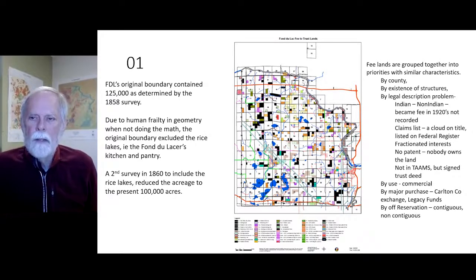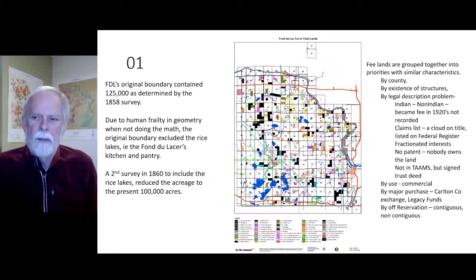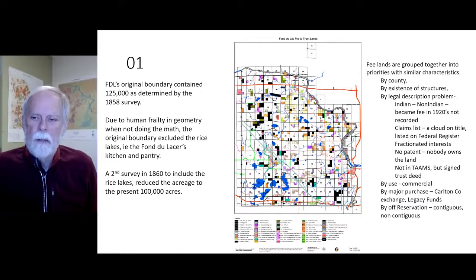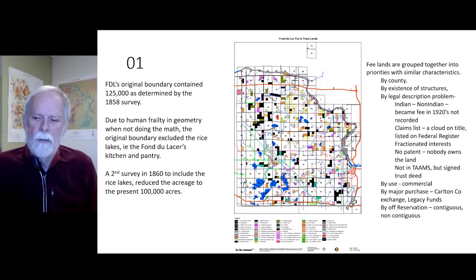Fee lands are grouped together into priorities with similar characteristics such as by county, by existence of structures, and by legal descriptions. Problems include: Indian versus Indian land that became fee in 1920 and was not recorded; a claims list — a cloud on the title listed on the federal register; fractionated interest; no patent; nobody owns the land; or it's not in TAMS but has an assigned trust deed.